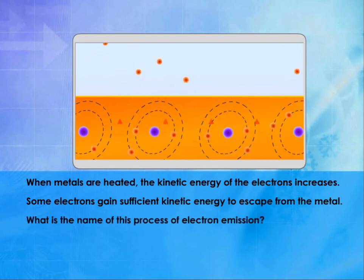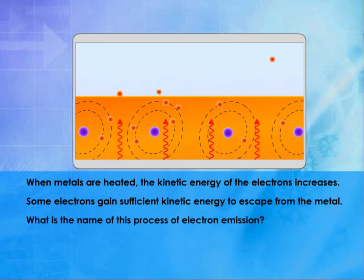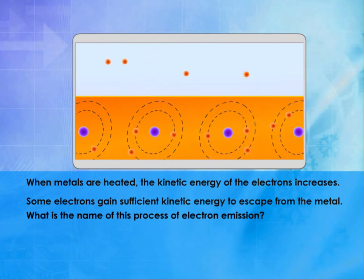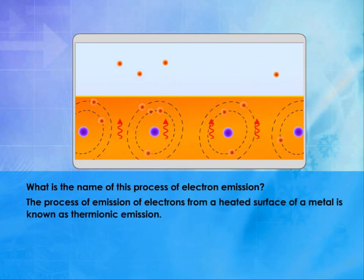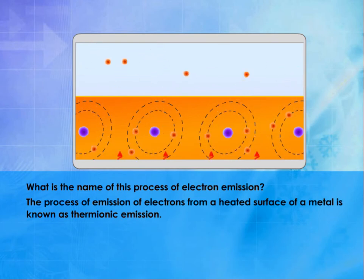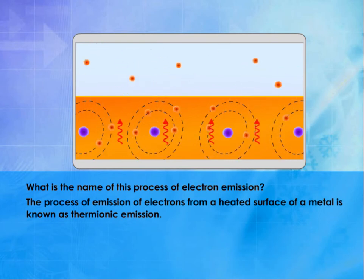What is the name of this process of electron emission? The process of emission of electrons from a heated surface of a metal is known as thermionic emission.